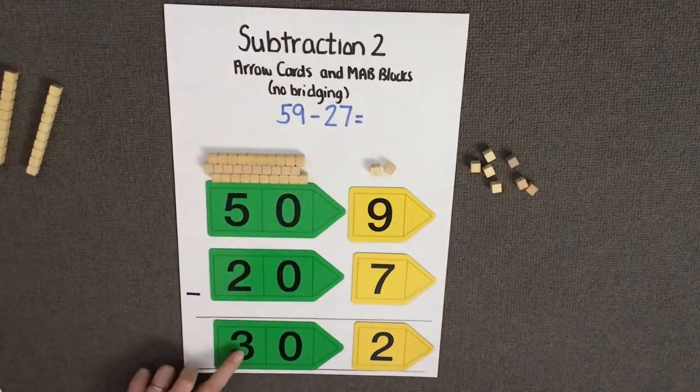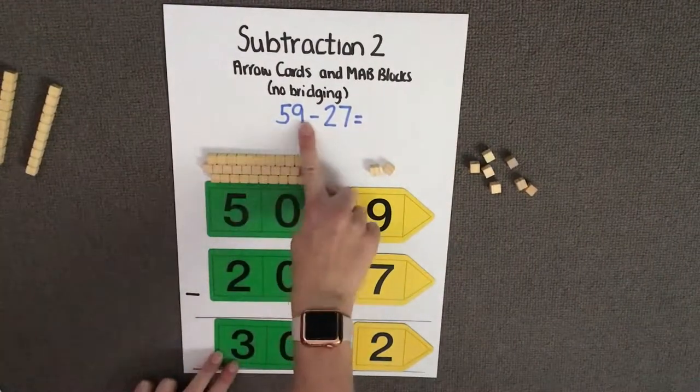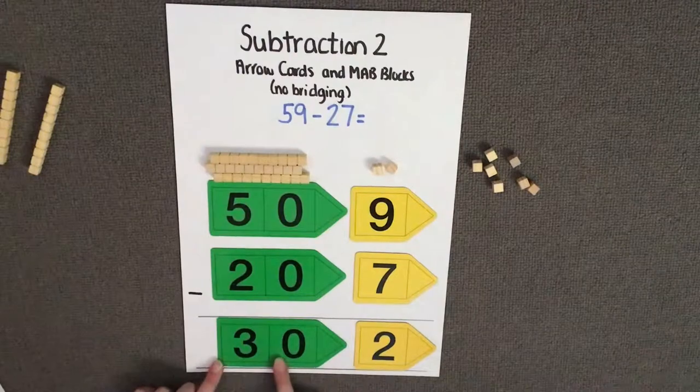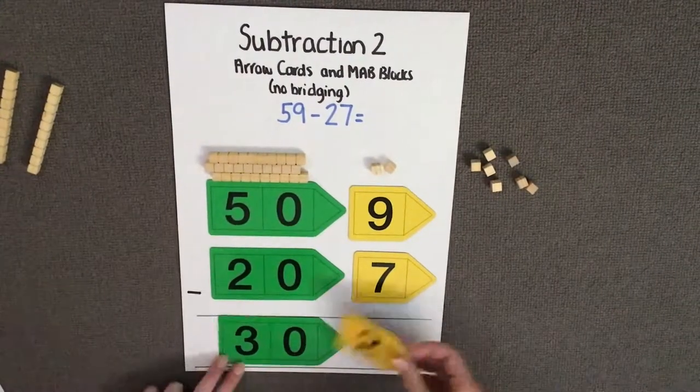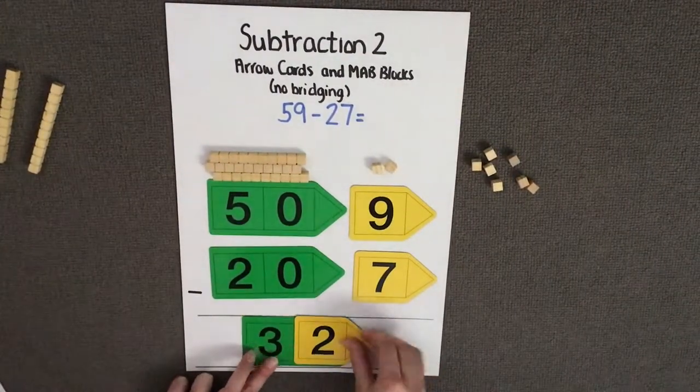This then gives us our answer. So 59 take away 27 gives us 32. 3 tens and 2 ones which together makes 32.